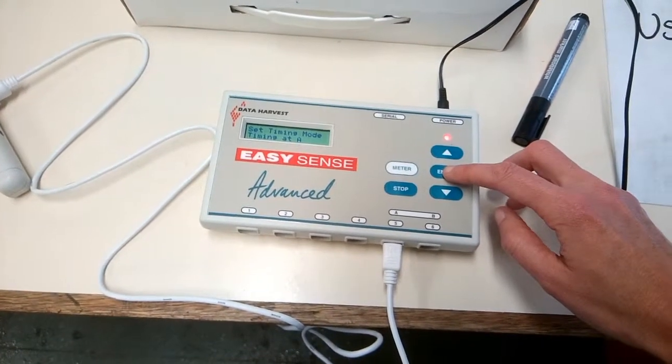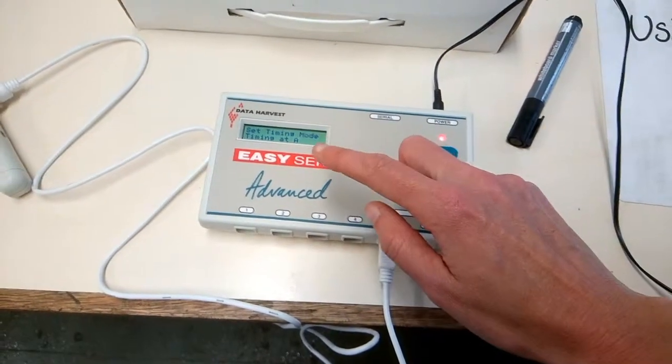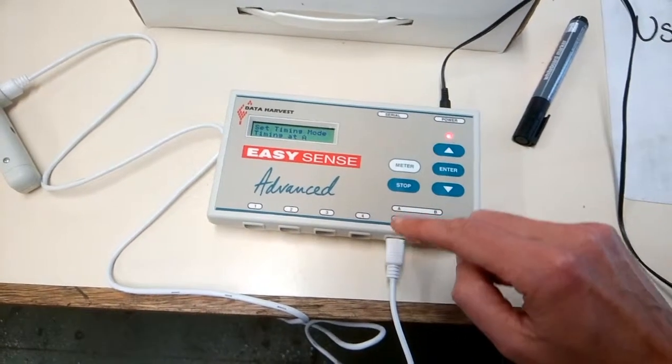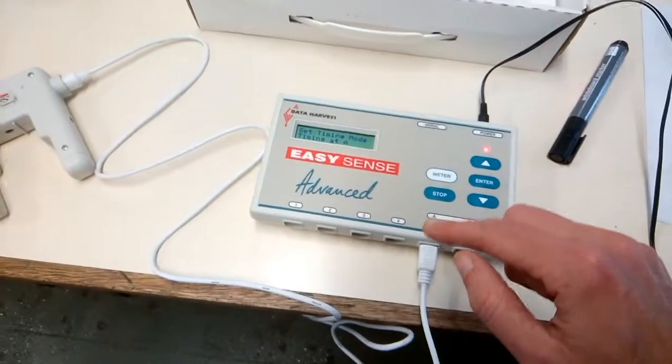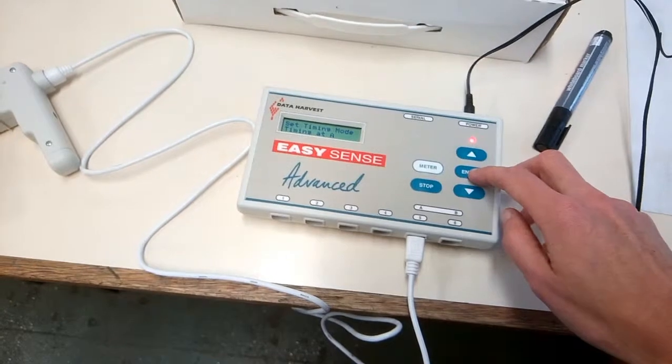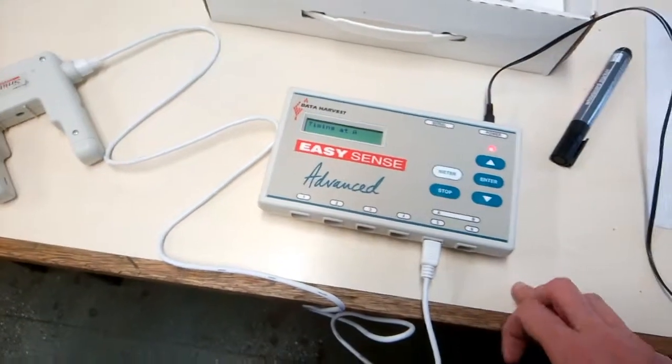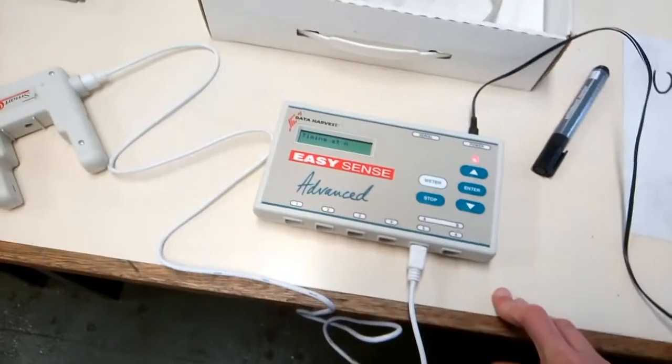To start with, we want to set timing mode, timing at A. We've just got a light gate connected to A, so we want timing at A. So we press enter there, and that should be set up for timing at A.